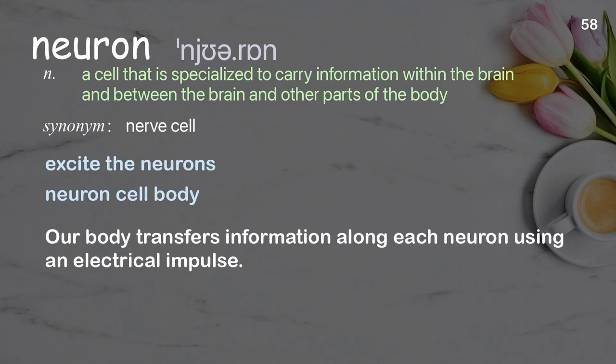Neuron. Examples: excite the neurons, neuron cell body. Our body transfers information along each neuron using an electrical impulse.